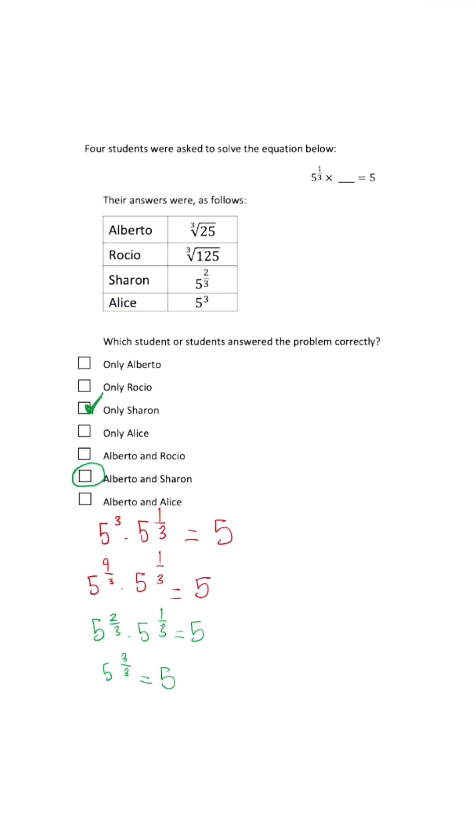When we look at our last answer choice, Alberto, remember that when we write 25 to the 1/3 power, we can rewrite this with a base of 5. So 25 to the 1/3 is the same as 5 squared to the 1/3 power.